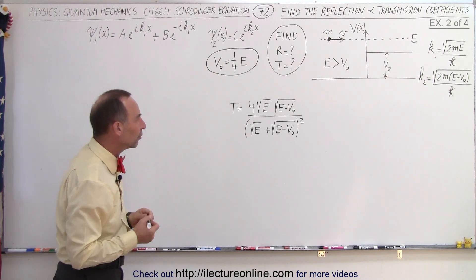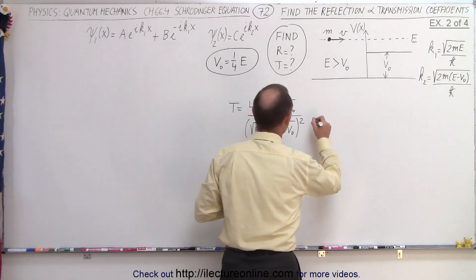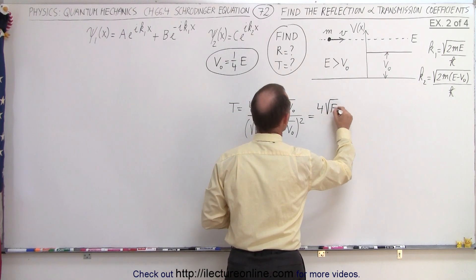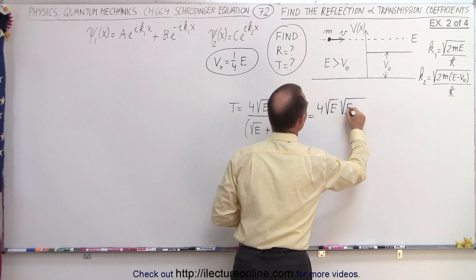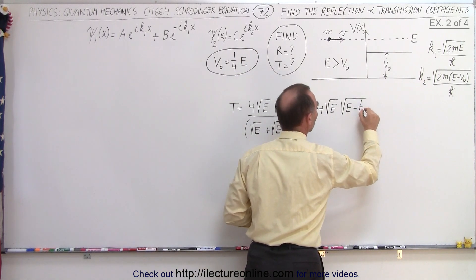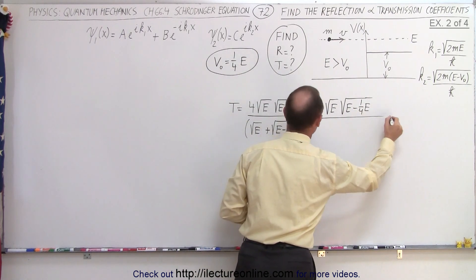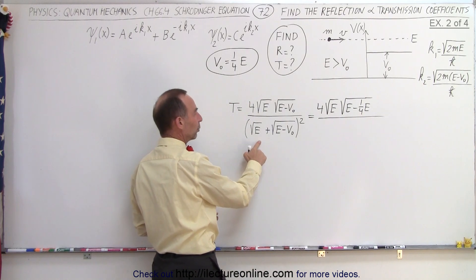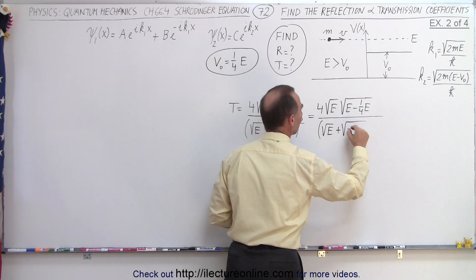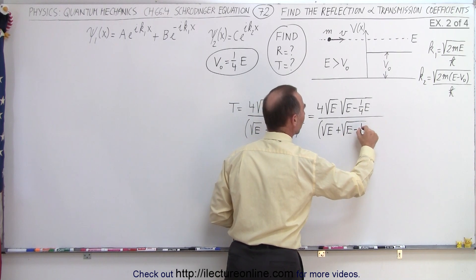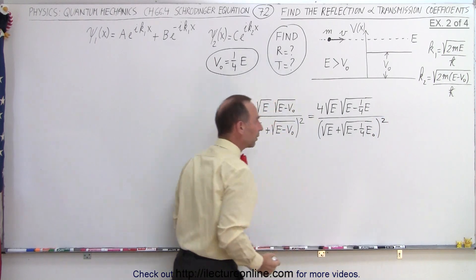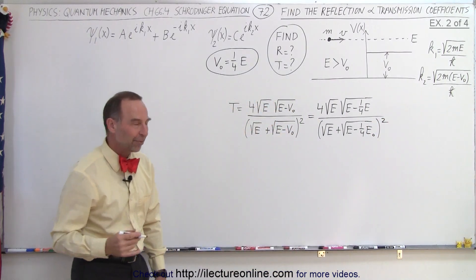So let's go ahead and plug that into this equation and see if we get the same result. This becomes equal to 4 times the square root of E times the square root of E minus V-naught. And V-naught is one quarter E, so it becomes one quarter E. The whole thing is divided by the denominator, which will be the square root of E plus the square root of E minus one quarter E, and the denominator is squared.